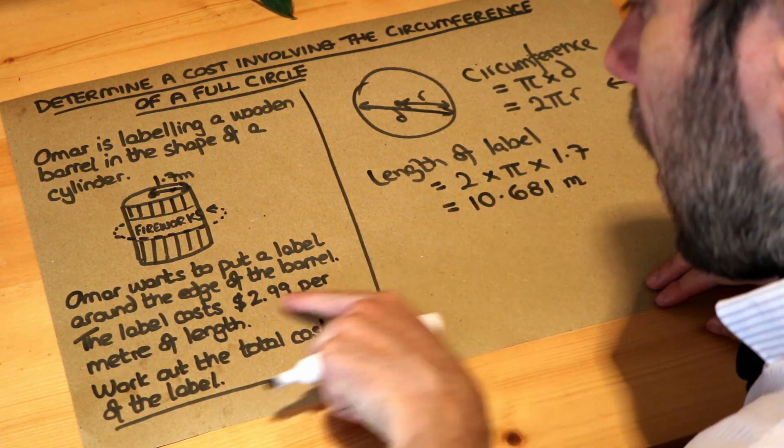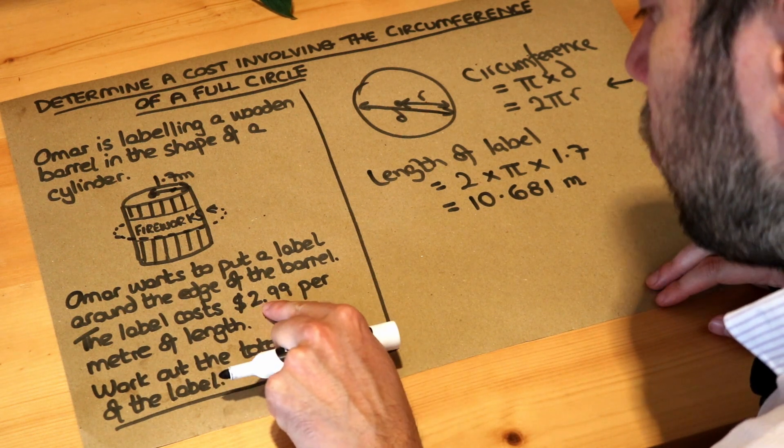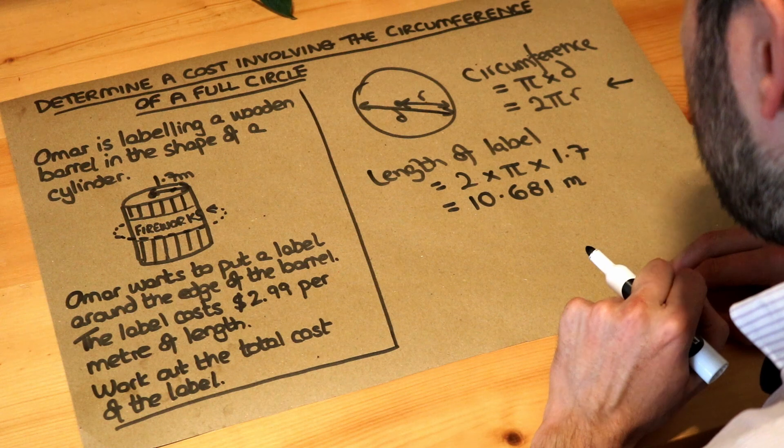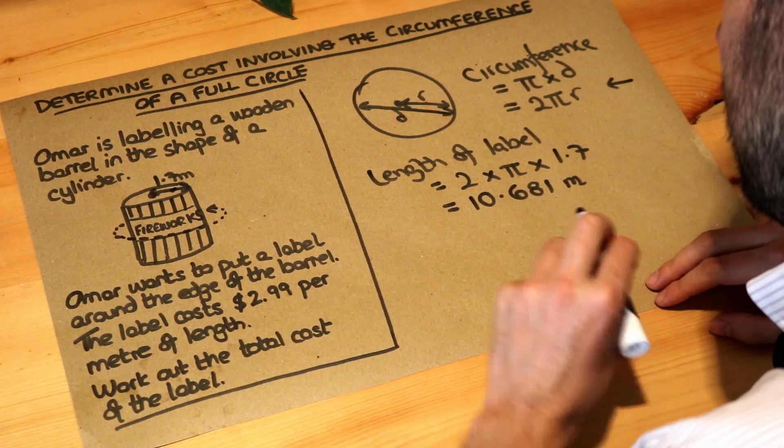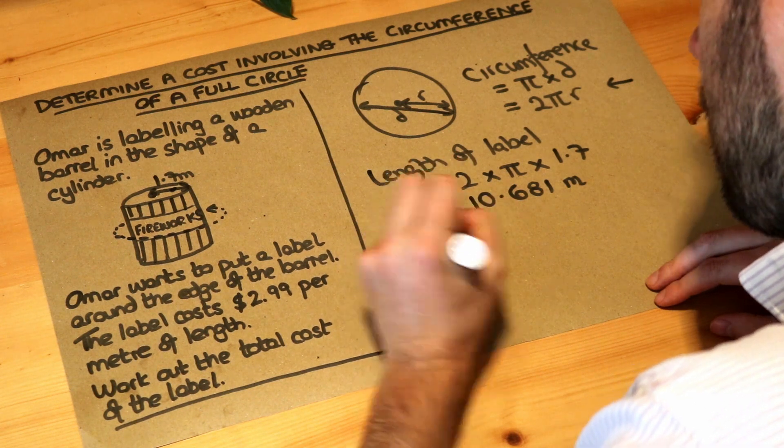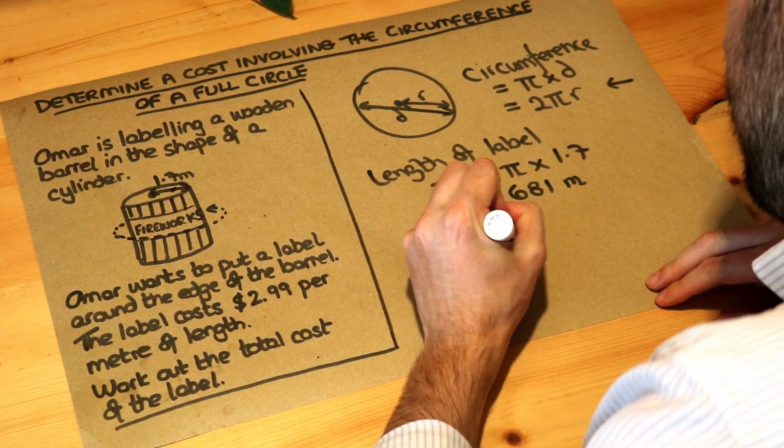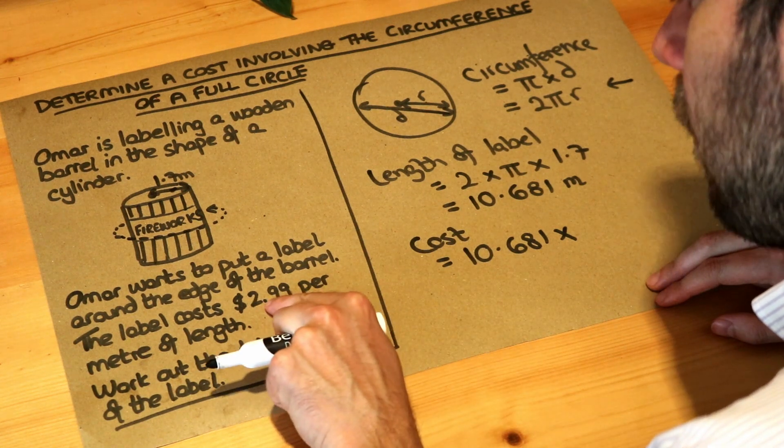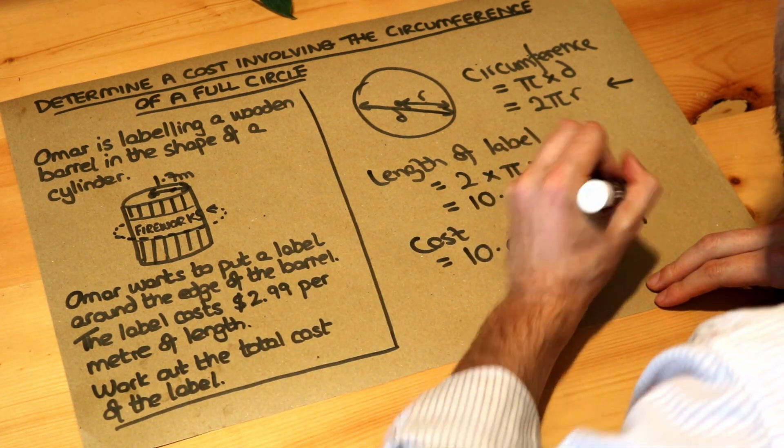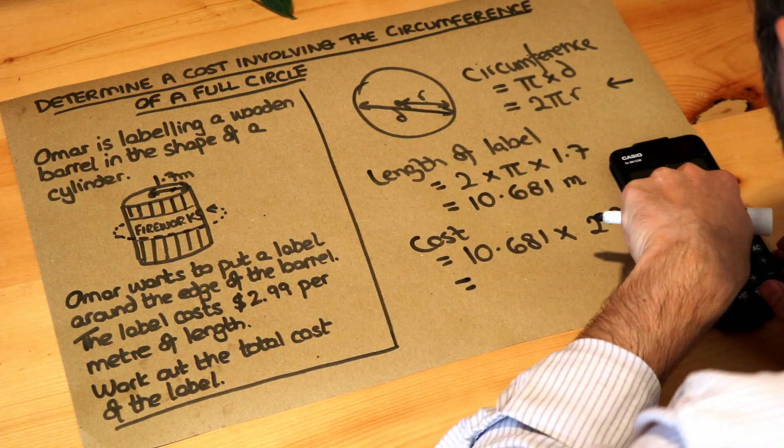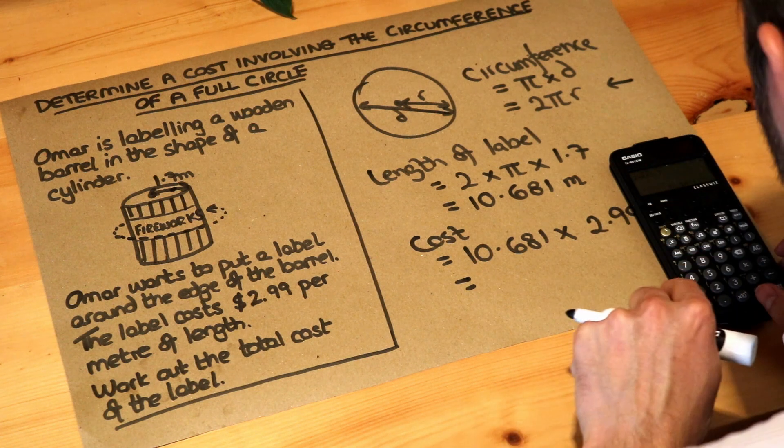So that's the length of the label and we're told we're being charged $2.99 for each metre of length. So we just need to times those two numbers together, so the cost will be that length multiplied by the rate, what you're paying for each metre of length, so $2.99. And if I do that on my calculator, I'm just going to use that 10.681 directly from my calculator.